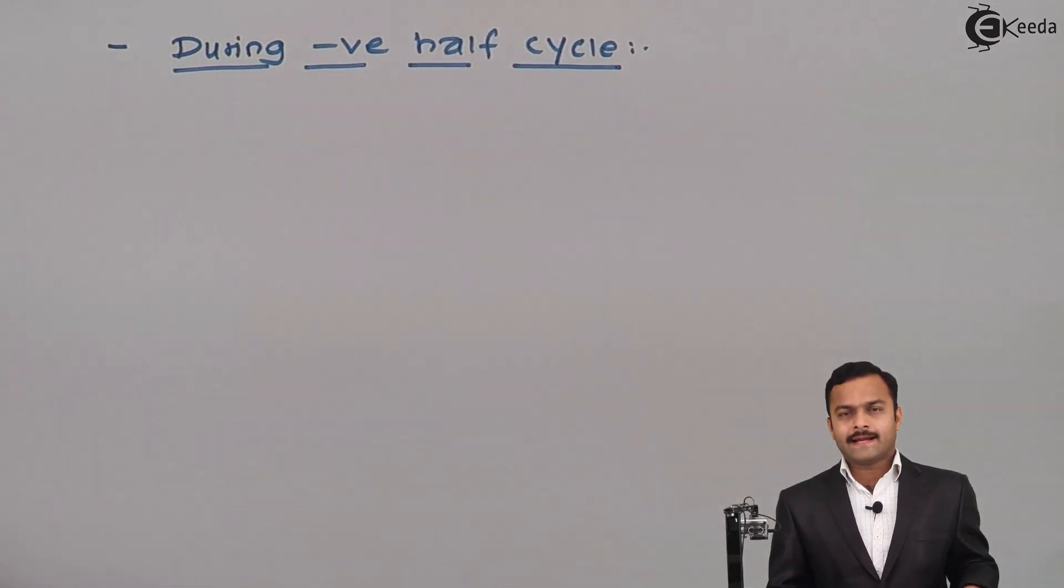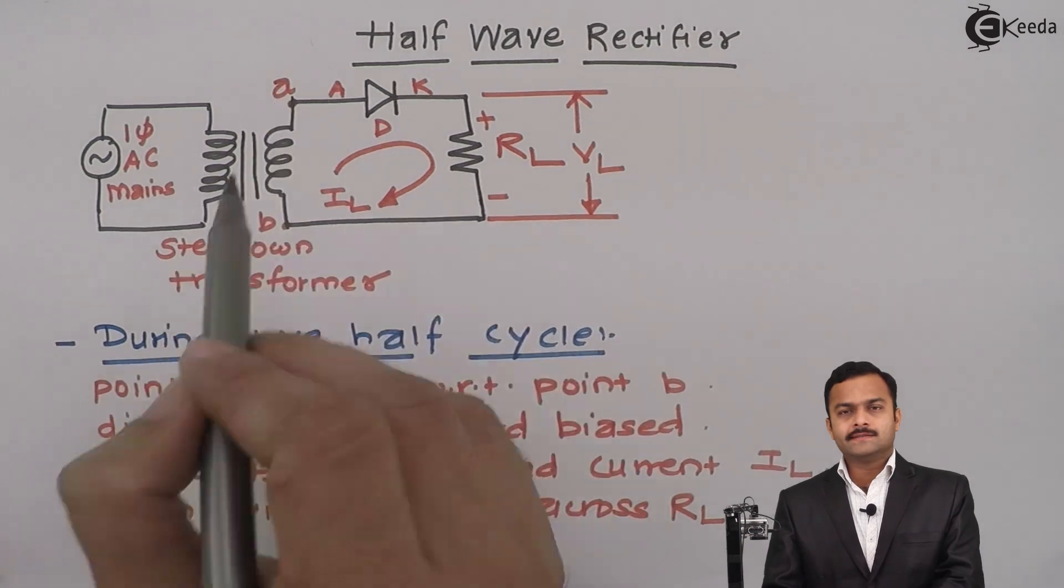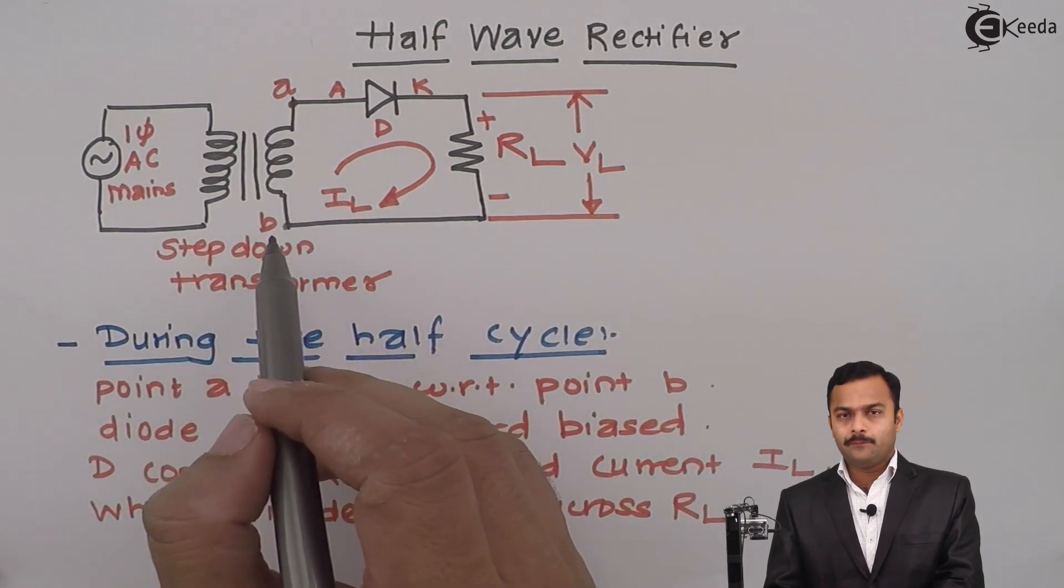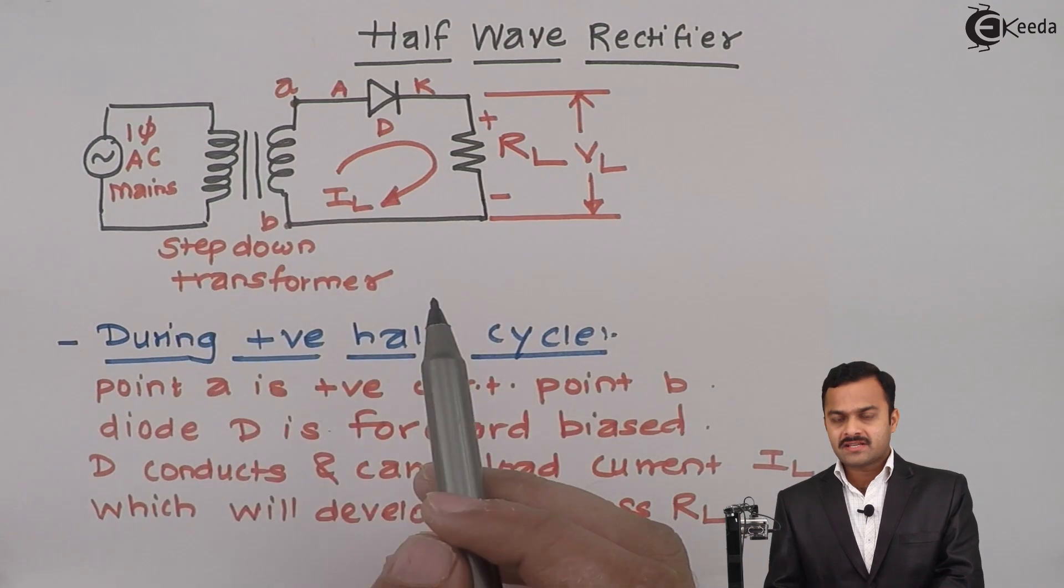During the negative half cycle, point A is more negative compared to point B, hence diode D is reverse biased.